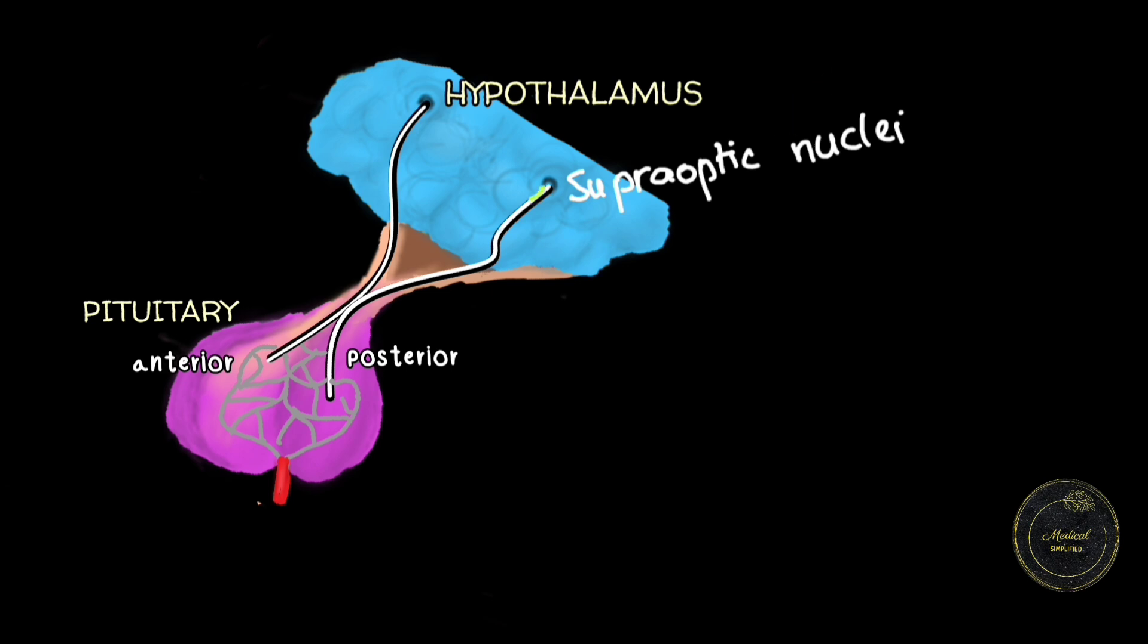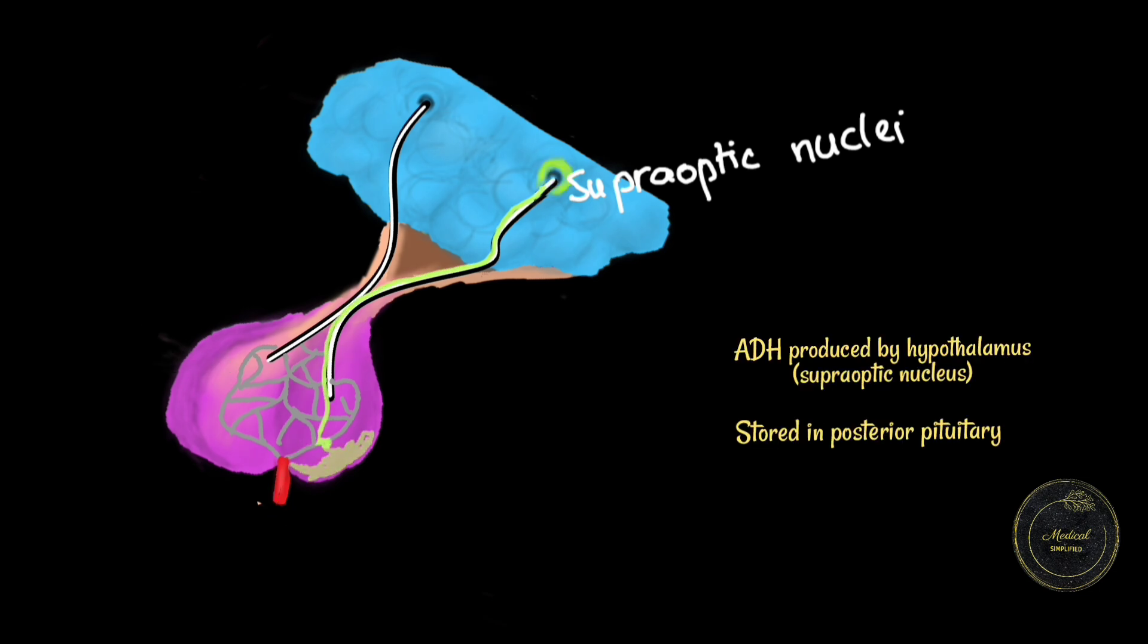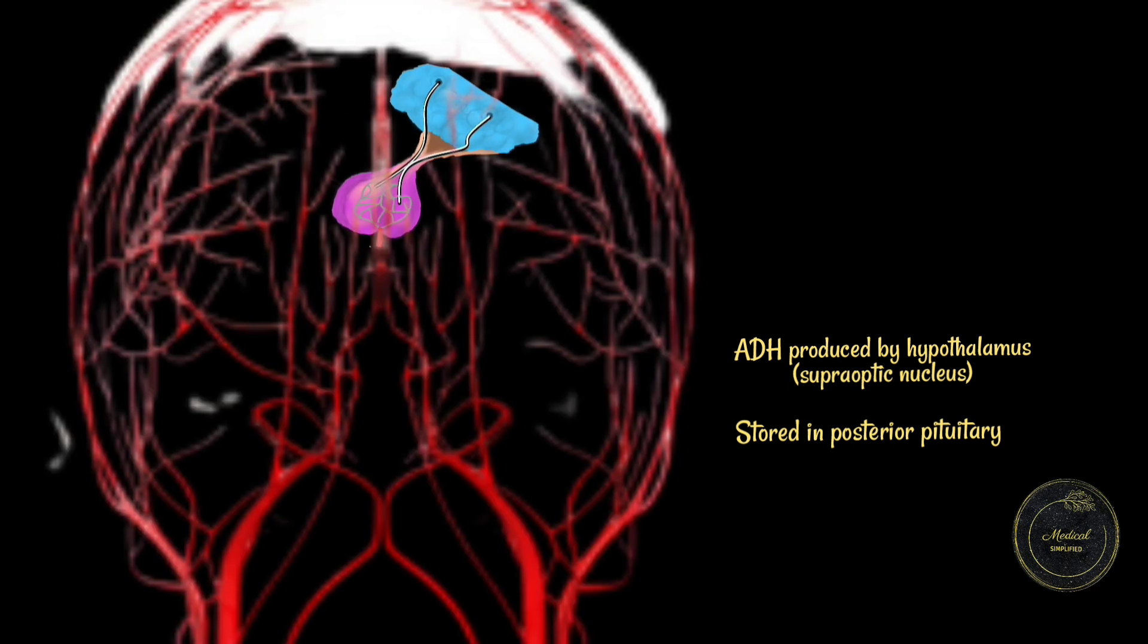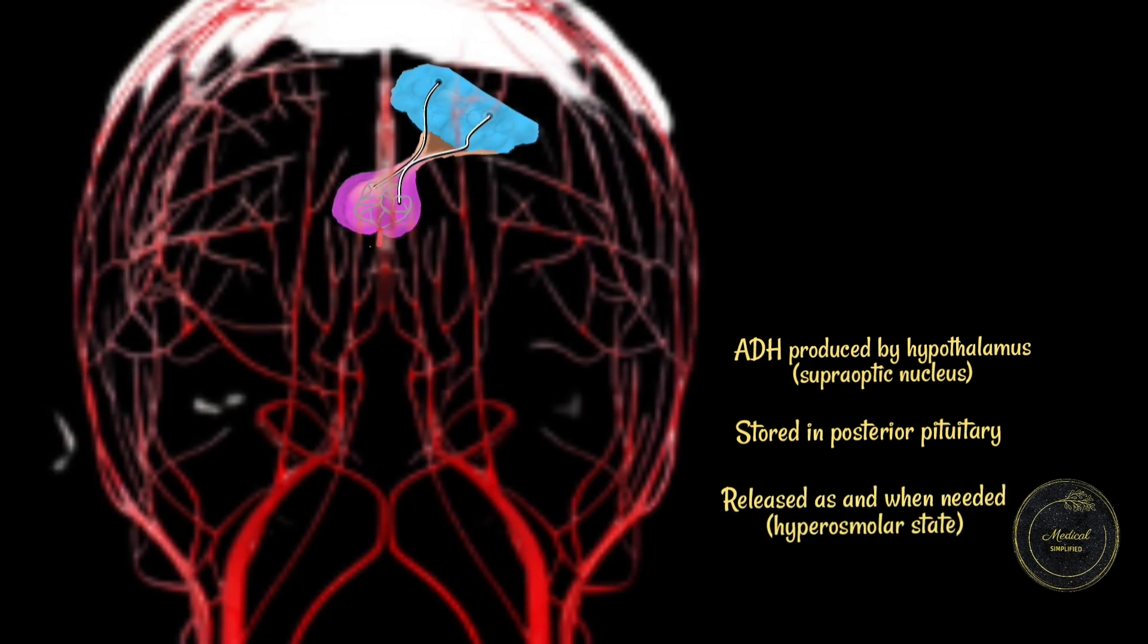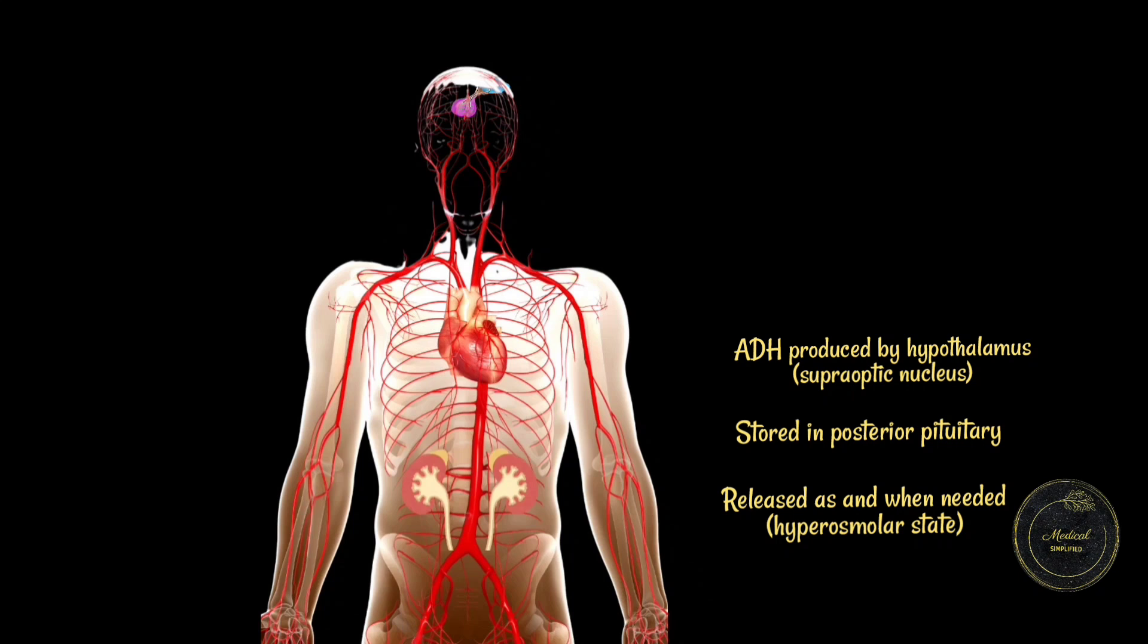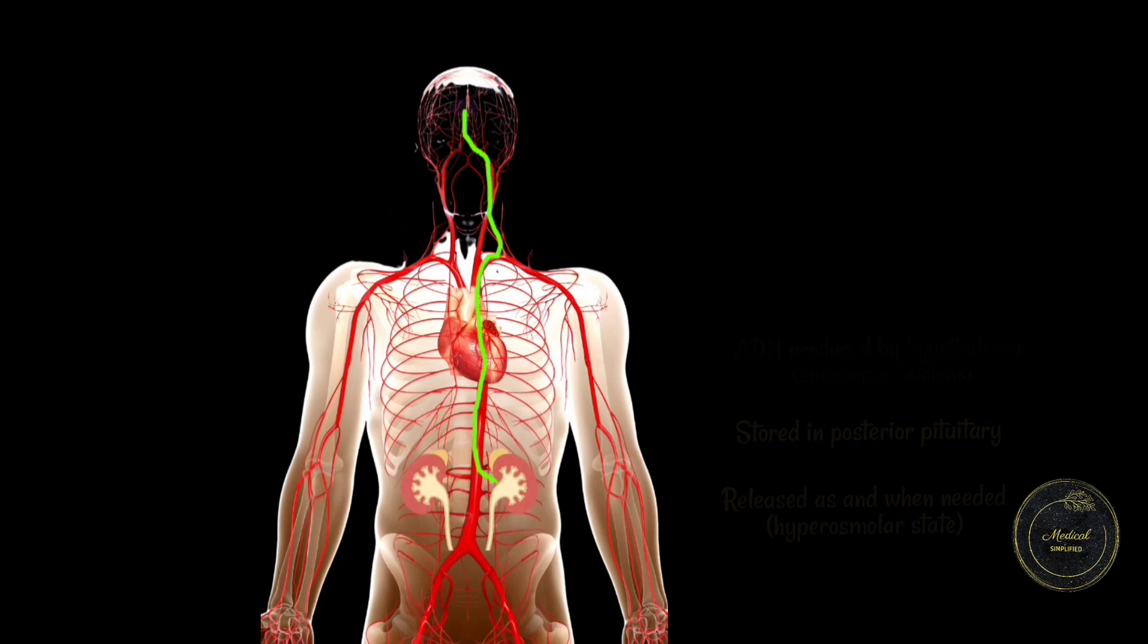The hypothalamus will start production of the ADH and this will be stored in the posterior pituitary. In the hyperosmolar state, this ADH will be released into the blood circulation and via the blood circulation, it will reach the kidneys.